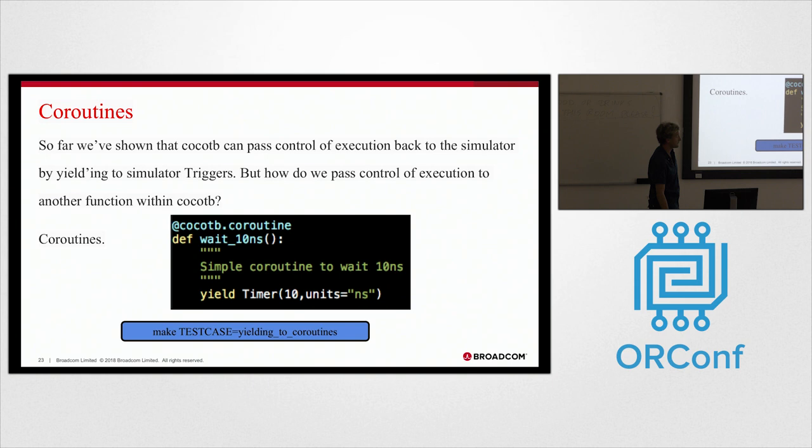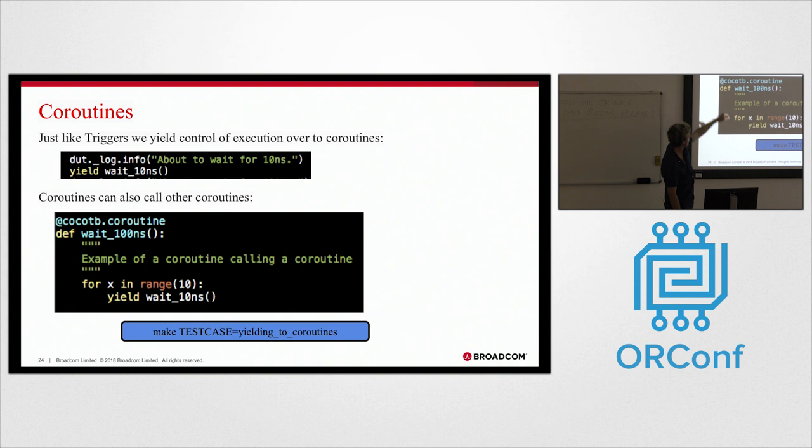So we've so far shown how we pass control back to the simulator, but what about within Cocoa TB? CocoTB uses coroutines, and this is actually part of the CocoTB name. It's coroutines and co-simulation. So this is a pretty simple coroutine here that will wait 10 nanoseconds. So to do that, you again just yield, so yield on this wait 10 nanoseconds coroutine, and you can build up coroutines calling other coroutines.